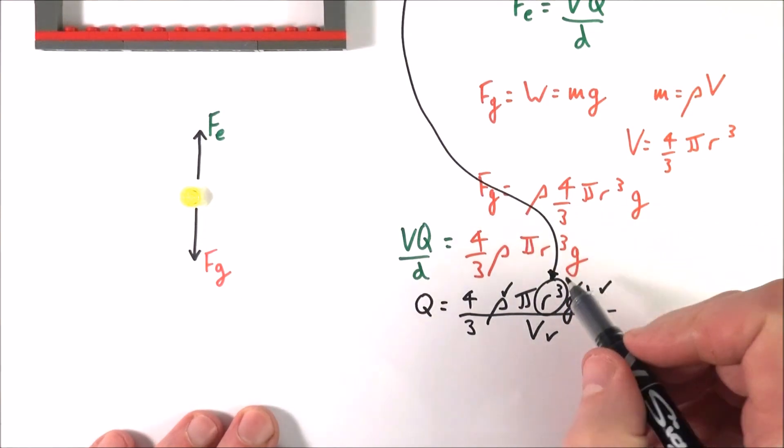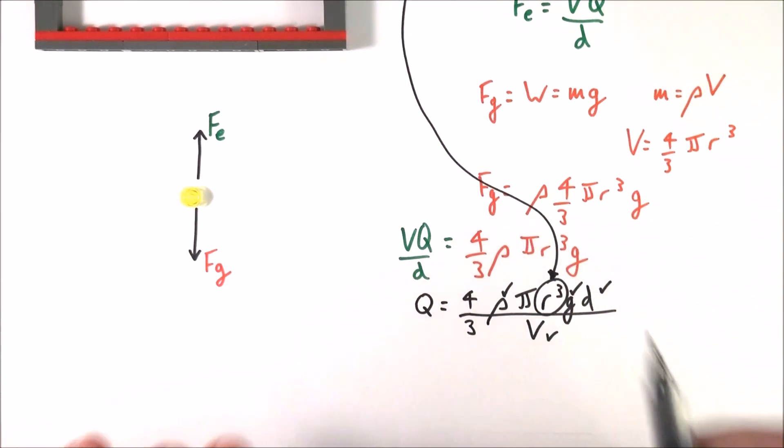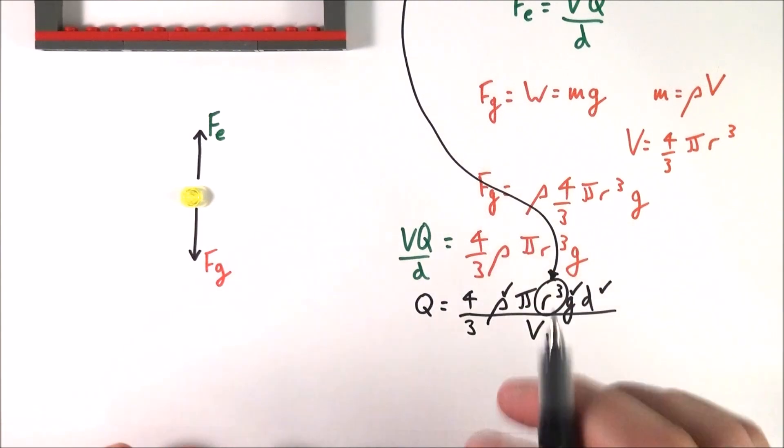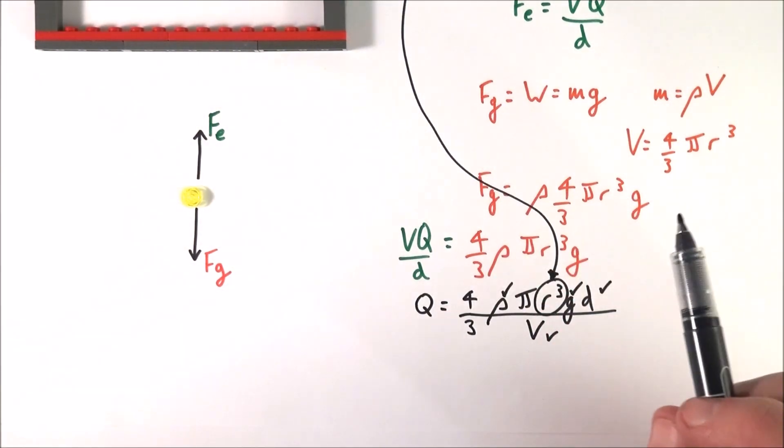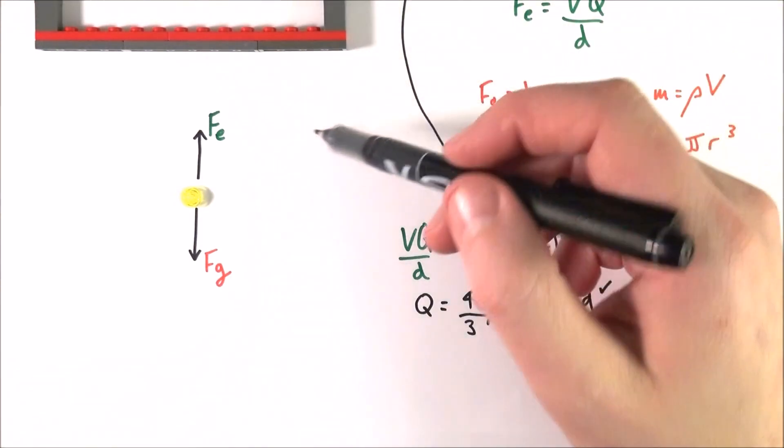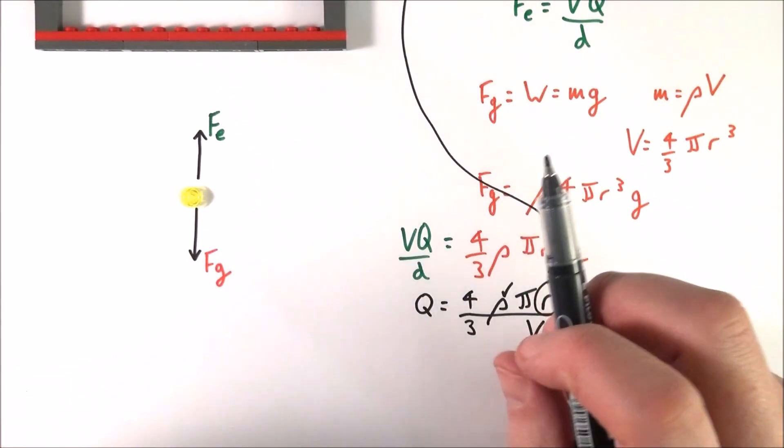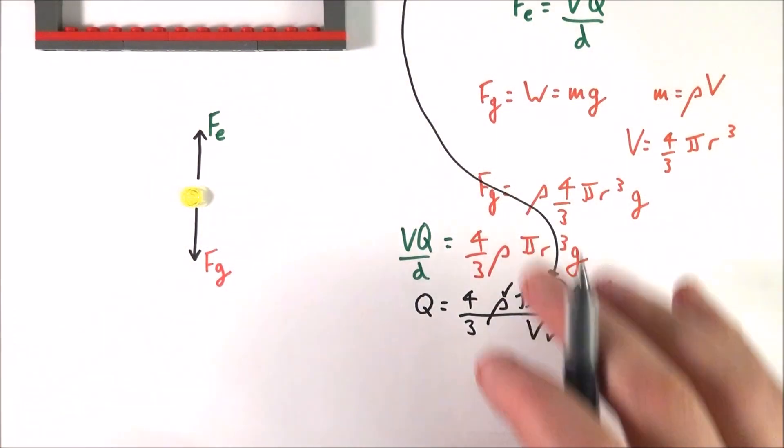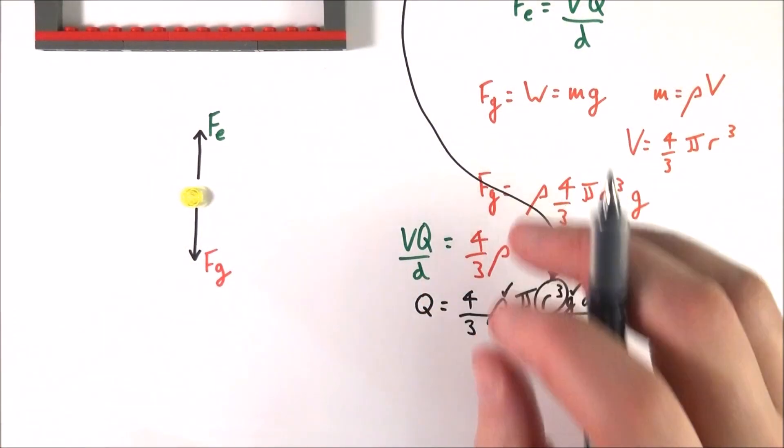And then we have our value for R, which we can use in this. So basically, you need to measure lots and lots of different things. You need to know the viscosity of air, the density of oil, the gravitational field strength, the distance between the plates, the potential difference, how fast it's moving, loads and loads of different things. And therefore there are many, many sources of experimental error. But what was really important were the results that Millikan got.